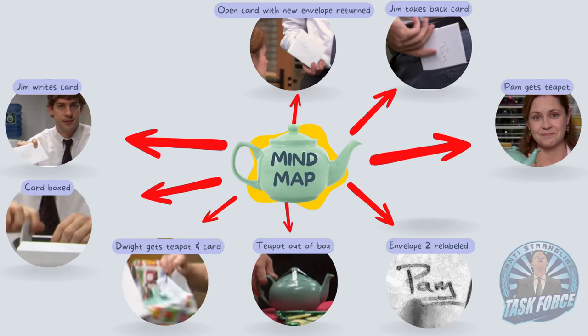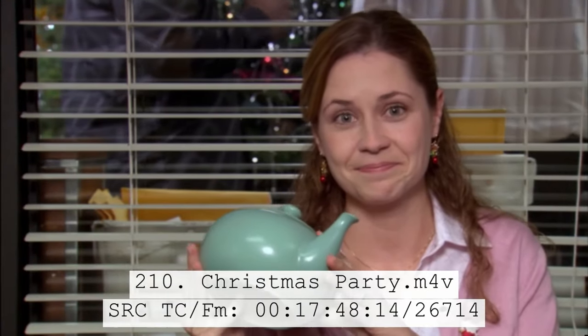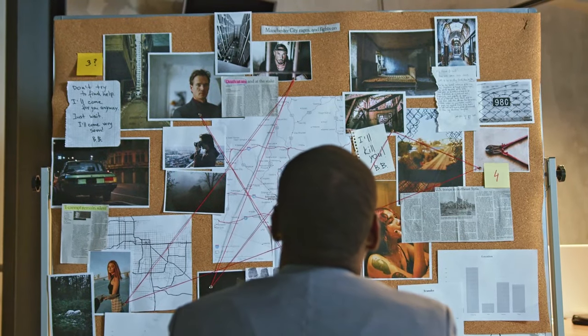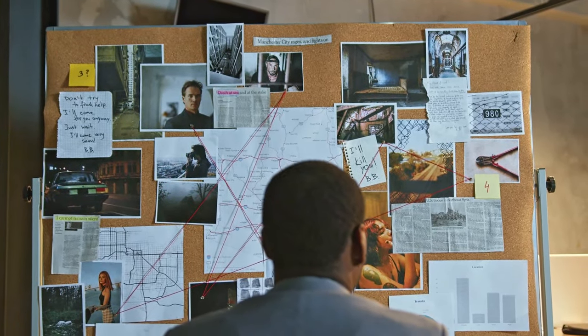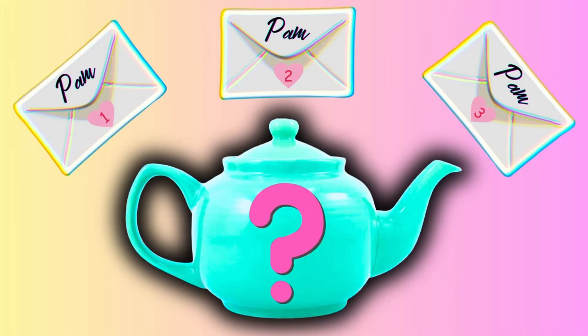Fast-forwarding to Season 9, Jim returns what is assumed to be a different card in an open envelope, again with a different label — this is the third teapot envelope. These are the major building blocks we have so far, but we are missing a couple. What we are going to work out in this episode is exactly what was written in the card, and we are going to establish the moment that the iPod was traded for the teapot.